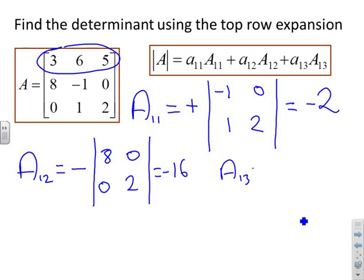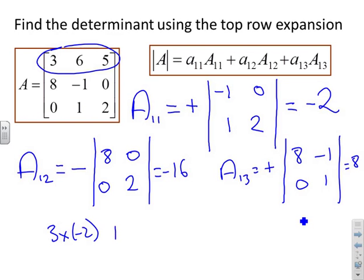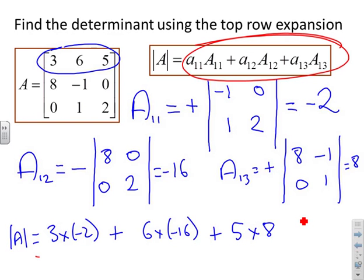A13 gets a positive sign from the sign matrix. Crossing off the first row and third column gives [8, -1; 0, 1], which has determinant 8, so A13 = 8. The final formula is: det(A) = 3×(-2) + 6×(-16) + 5×8, giving -6 - 96 + 40.